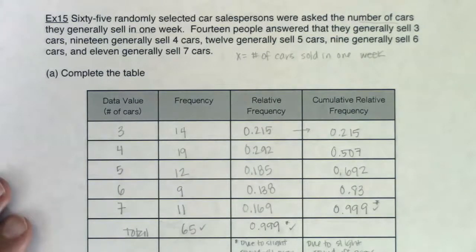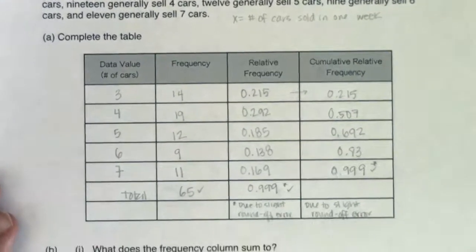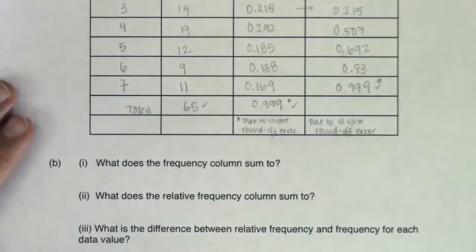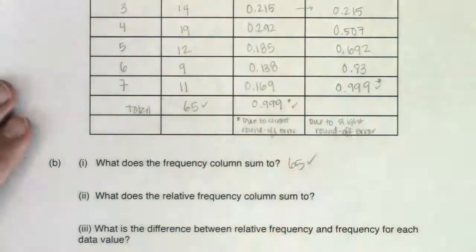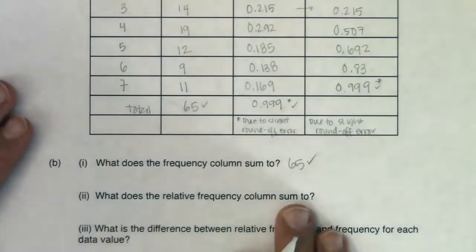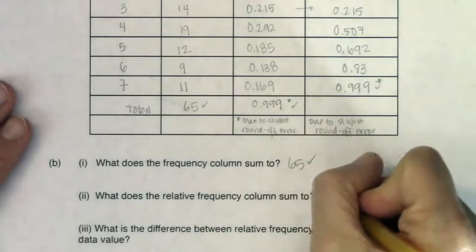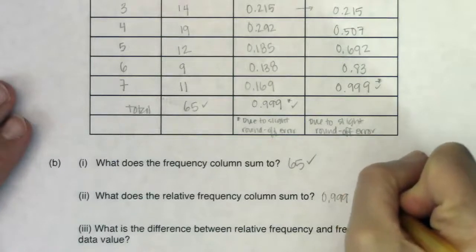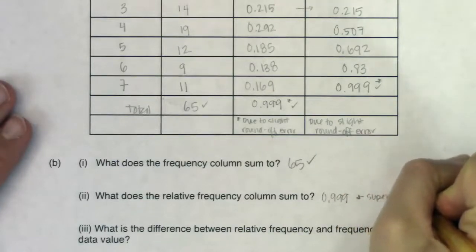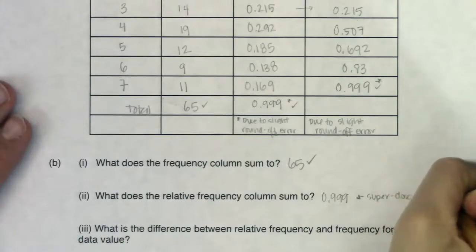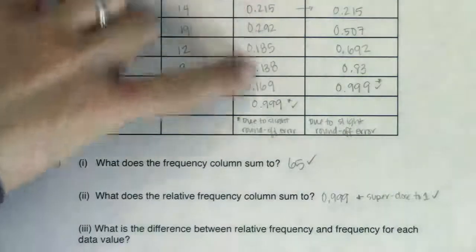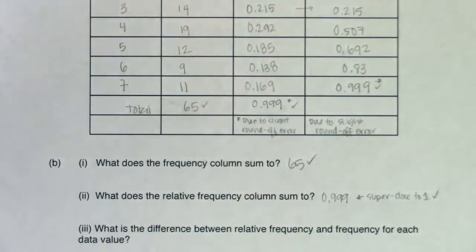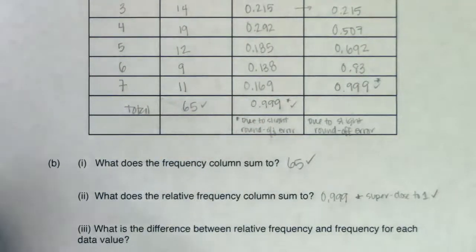Now to answer the questions. What does the frequency column sum to? It summed to 65, which is good — it should always total your sample size. What does the relative frequency column sum to? It summed to 0.999, which is super close to 1, which is what it should have summed to. The 0.001 difference is due to rounding to three decimal places.